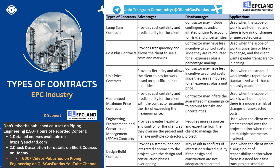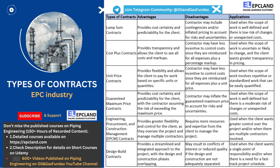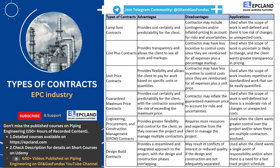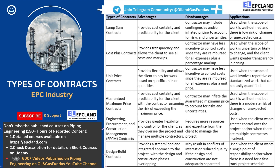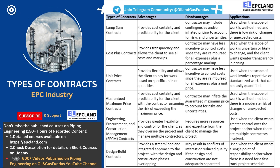Today, we will be discussing the six main types of contracts used in this industry. Each of these contracts has its own advantages and disadvantages and is suited for different project scenarios. By the end of this video, you will have a clear understanding of each of these contracts and be able to make an informed decision on which type of contract is best suited for your project. So, without further ado, let's dive into the world of EPC contracts.